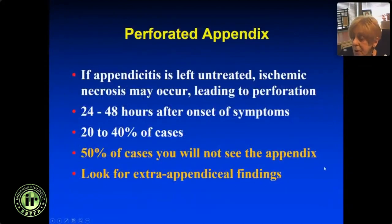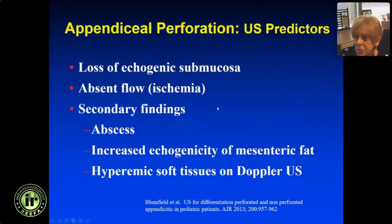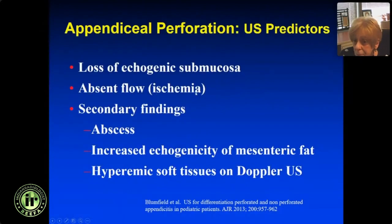Perforated appendix: if appendicitis is not treated, it may become ischemic, necrotic, and perforate. That occurs 24 to 48 hours after onset of symptoms in 20 to 40% of cases. Once it perforates, in 50% of cases you may not see the appendix. The best predictors of perforation are: loss of the echogenic submucosa, absent flow suggesting ischemia, and secondary findings including abscess, increased echogenicity of the mesenteric fat, and hyperemic soft tissues on Doppler ultrasound.